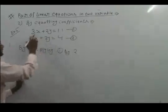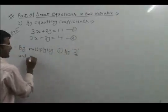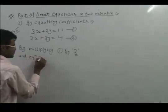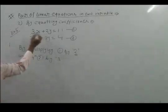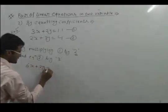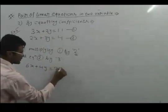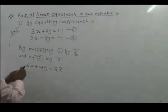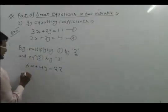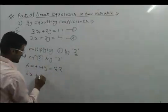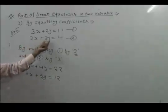So, multiplying equation number 1 by 2 and multiplying equation number 2 by 3. We can write: 6x plus 4y equal to 22 — multiply the whole equation by 2, so 3x×2 is 6x, 2y×2 is 4y, and 11×2 is 22. Now multiply equation 2 by 3: it gives 6x plus 9y equal to 12.